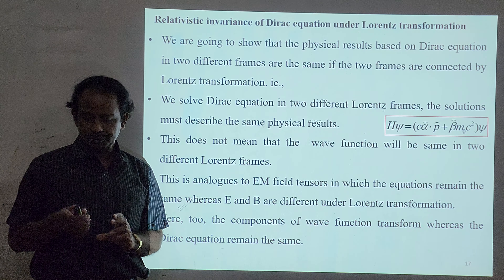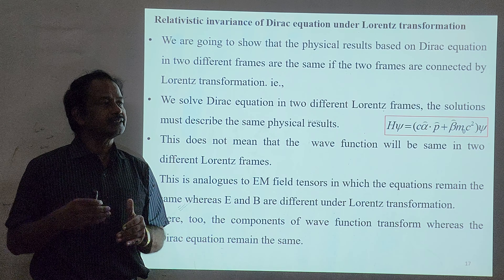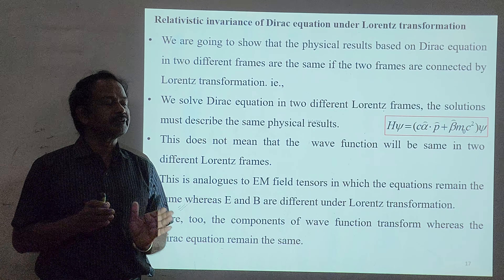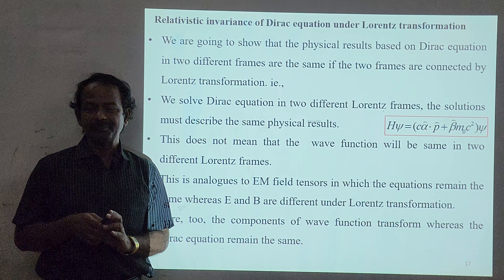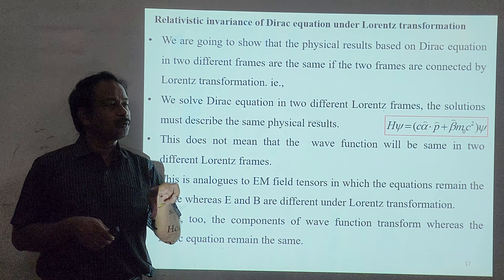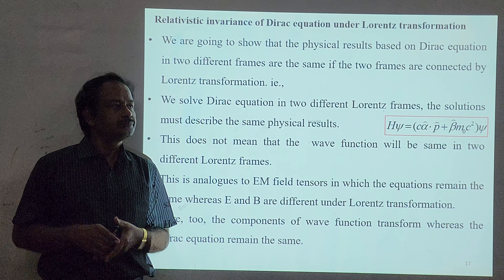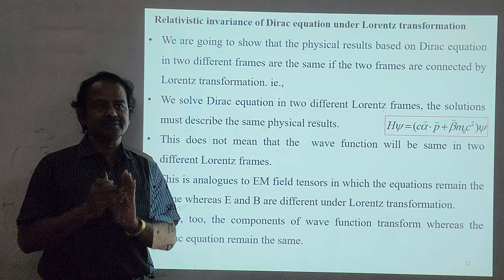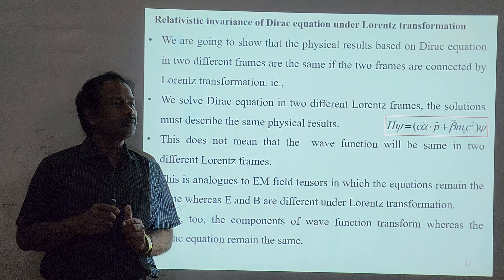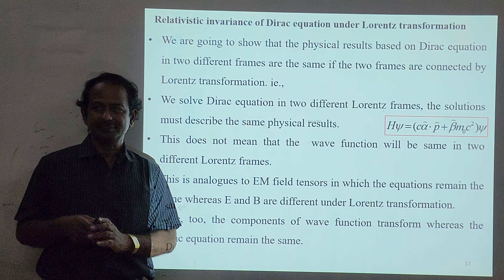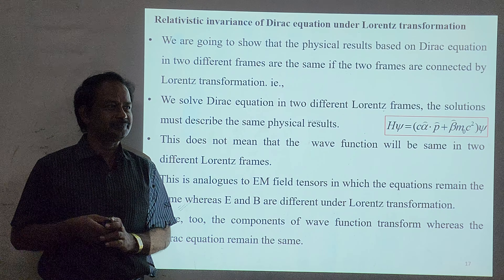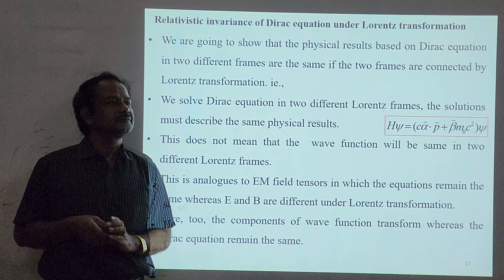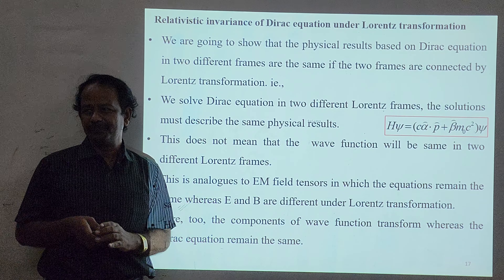Every theory should be consistent with the special theory of relativity. When talking about special relativity, we must work with Lorentz Transformation — changing from one coordinate system into another through some process. Mathematically, you have a matrix; when you multiply it with a column matrix, you get another column matrix. This matrix is the transformation. The physical results should be the same in both coordinate systems.